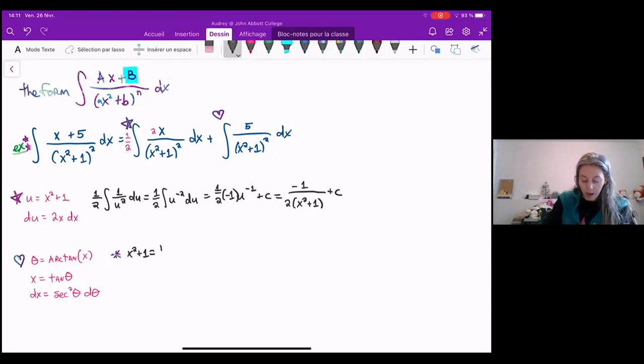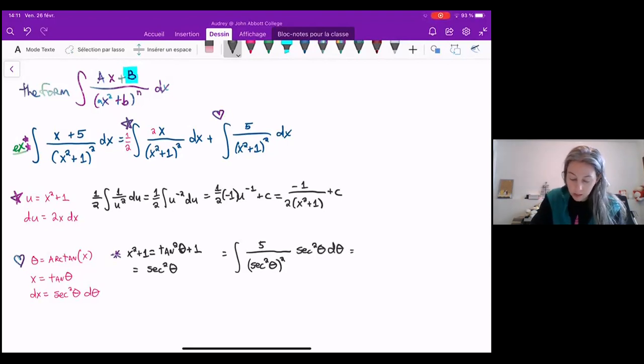So x squared plus 1 is actually tangent squared of theta plus 1, and tangent squared of theta plus 1 is equal to secant squared of theta. So now when I go and replace things in my integral, I end up with the integral of 5 over secant squared theta squared, and then my dx is secant squared theta d theta. And then some of those secant squared theta cancel out, and I can see that this is actually the integral of 5 cosine squared theta d theta.